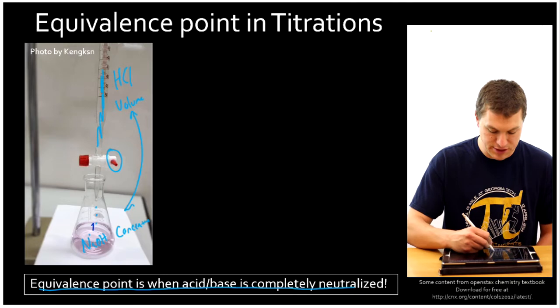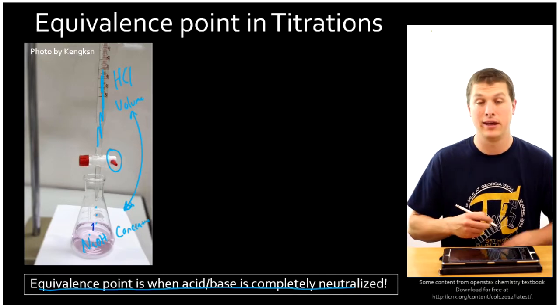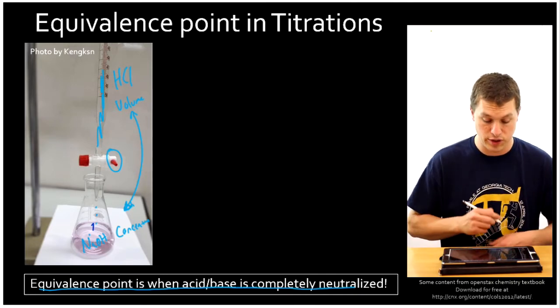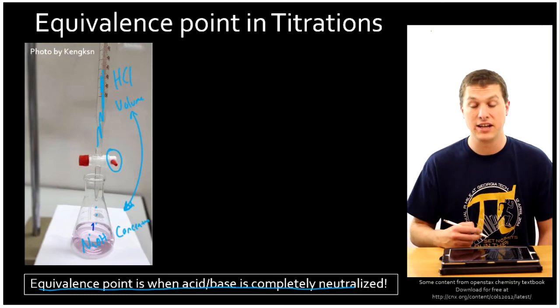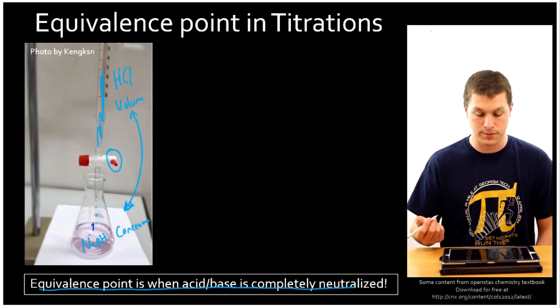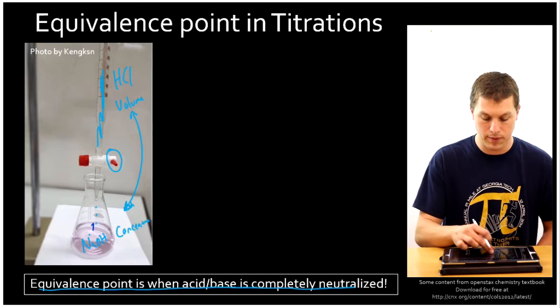So basically what our titration is going to let us do is calculate the concentration of what's down in our flask, or we could figure out what volume of HCl we needed to add to neutralize something. So we can go back and forth between volume and concentration.